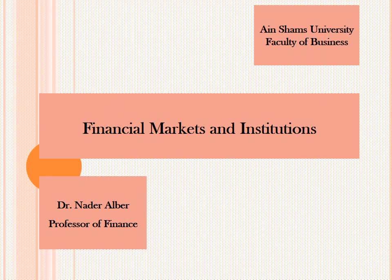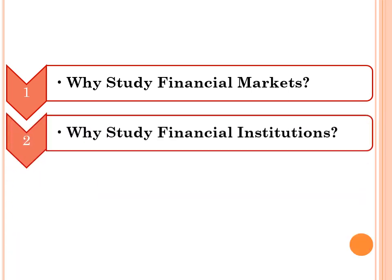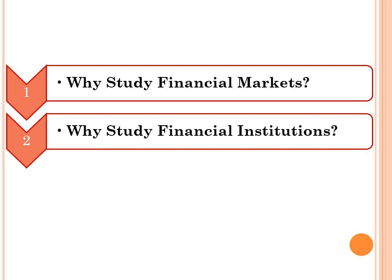Good evening, dear students. This is the second lecture in the topic of financial markets and institutions. The first lecture was about why we study financial markets, and the second is about why we study financial institutions. Financial markets can be divided into three main categories: the first is stock markets, the second is bond markets, and the third is the foreign exchange markets.